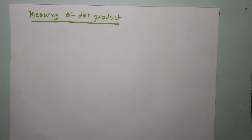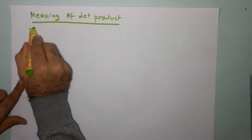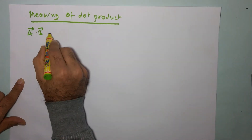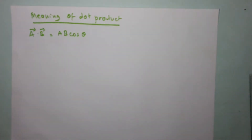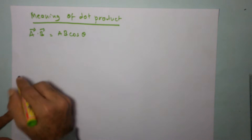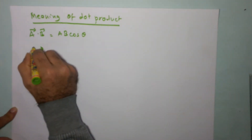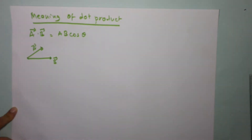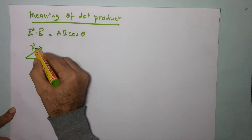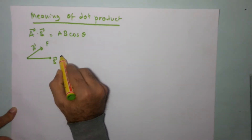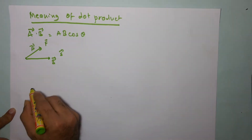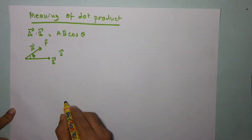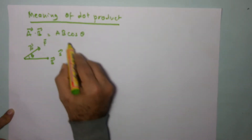In this video, I am going to talk about dot product and what exactly dot product means. We know that vector a dot vector b is given by ab cosθ. So what does this exactly mean — that's what we are going to attempt to understand. Let's say we have two vectors: vector a and vector b. These two vectors could be any vector quantity — for example, force and displacement. This angle is theta, the angle between the two vectors, and the dot product is given by ab cosθ.